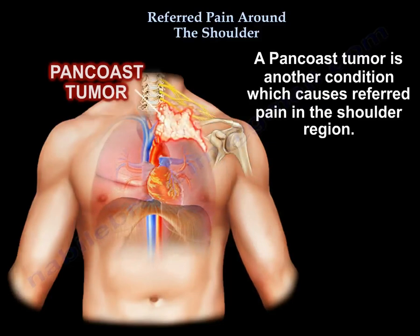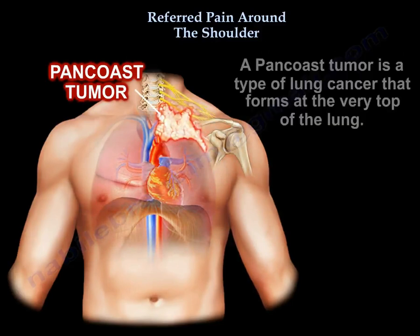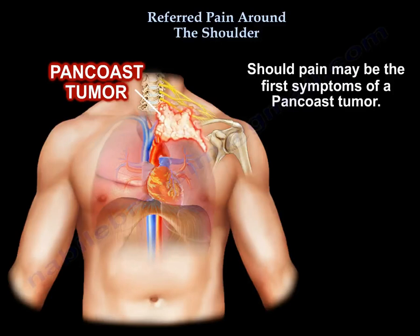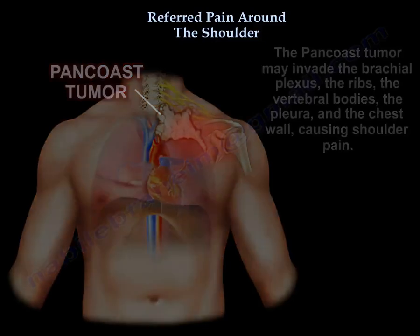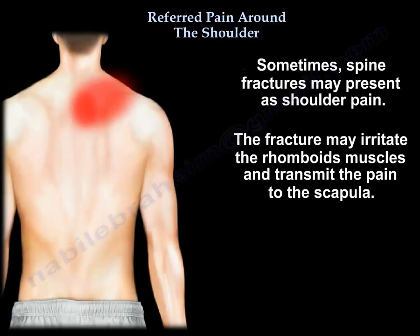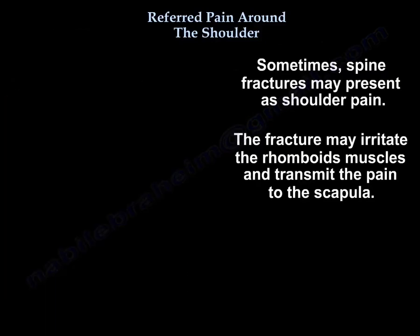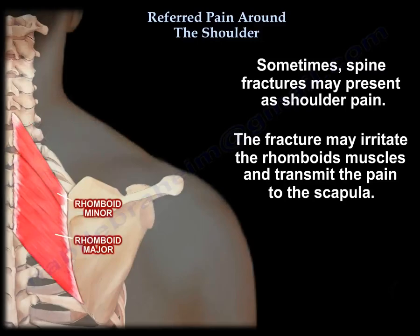A Pancoast tumor is another condition which causes referred pain in the shoulder region. A Pancoast tumor is a type of lung cancer that forms at the very top of the lung, and shoulder pain may be the first symptom. The tumor may invade the brachial plexus, the ribs, the vertebral bodies, the pleura, and the chest wall, causing shoulder pain. Sometimes a spine fracture may present itself as shoulder pain — the fracture may irritate the rhomboid muscle and transmit pain to the scapula.